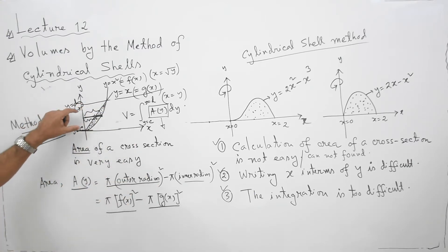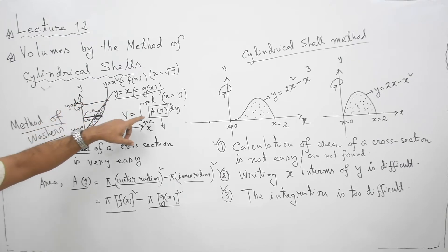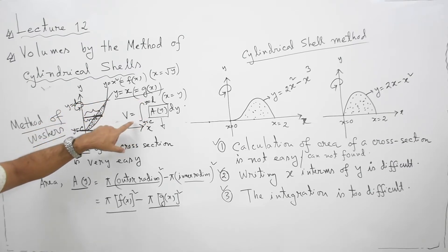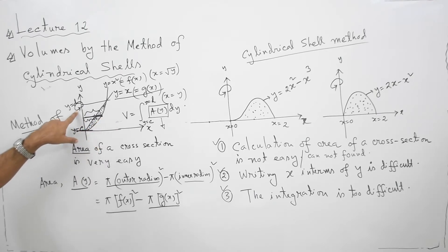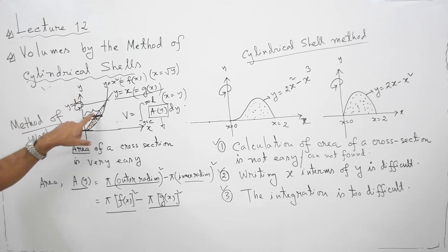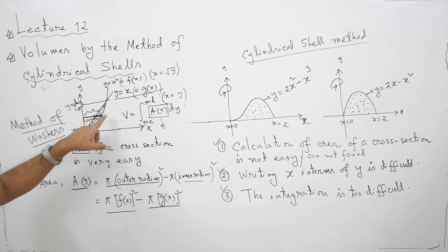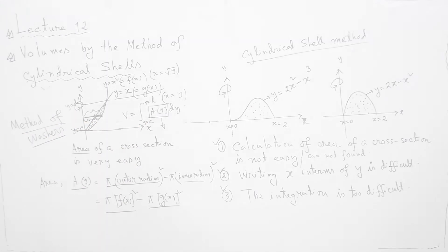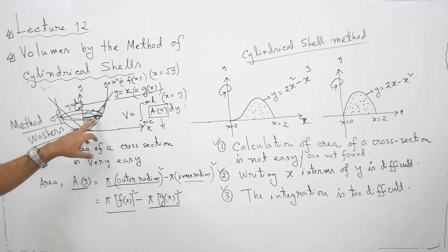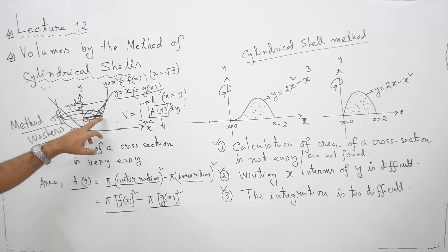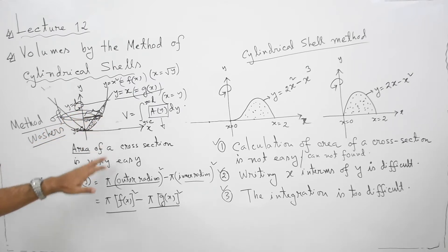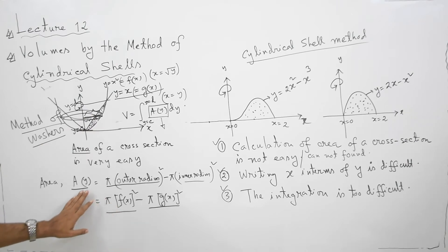The area of a cross-section is π times the outer radius squared minus π times the inner radius squared — that is, π[f(x)]² minus π[g(x)]². If you integrate this area of a cross-section from one end to another, you get the volume of the solid. When you revolve about the y-axis, the cross-section is perpendicular to the y-axis. So if the region is bounded on the right and left by curves, you can easily calculate the area of the cross-section.